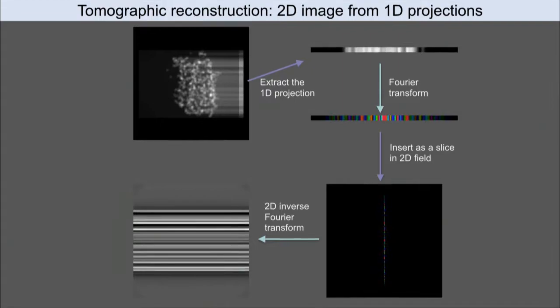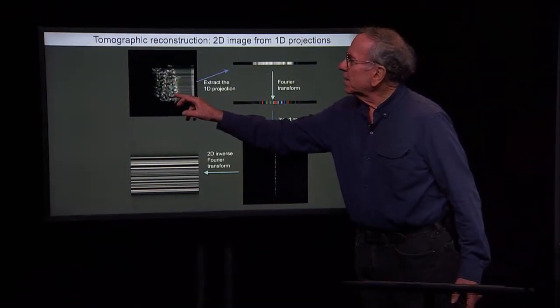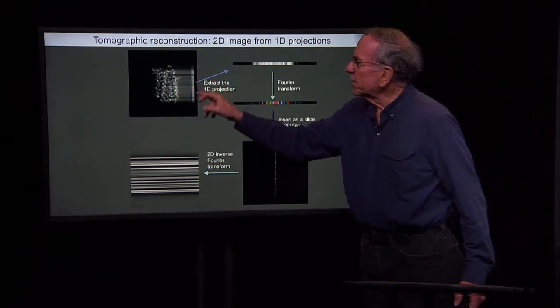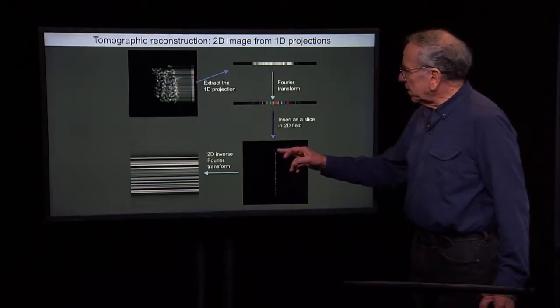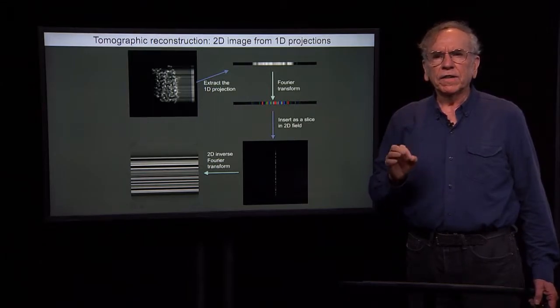say in this case in the horizontal direction of our object, and in this case the object is in two dimensions and our projection is in one dimension, that projection corresponds to a slice of that two-dimensional Fourier transform.